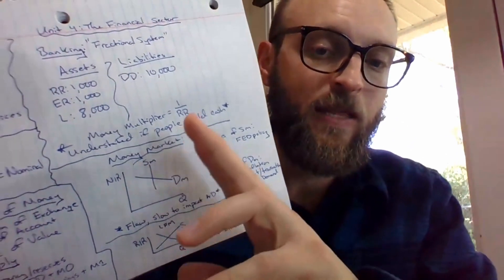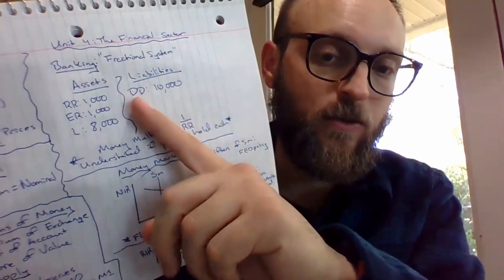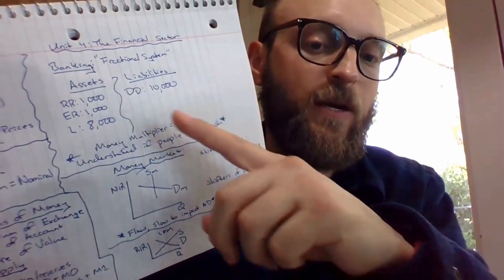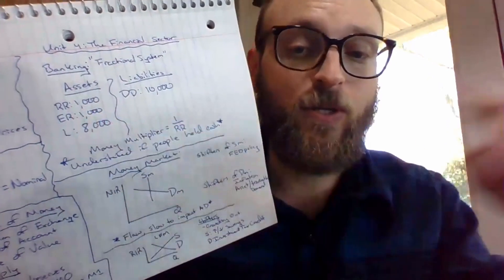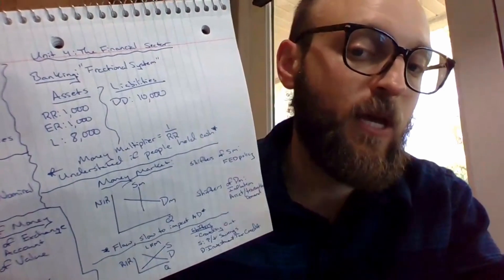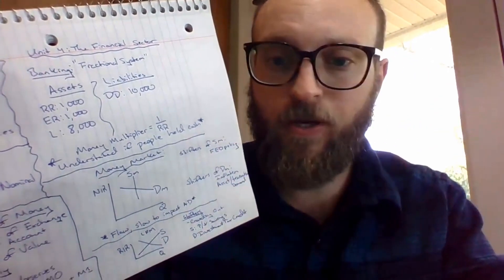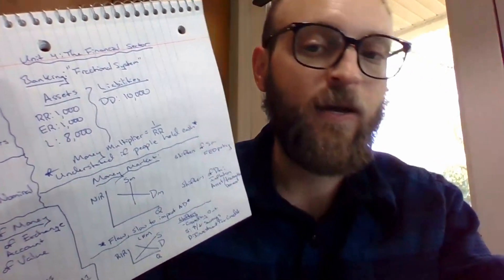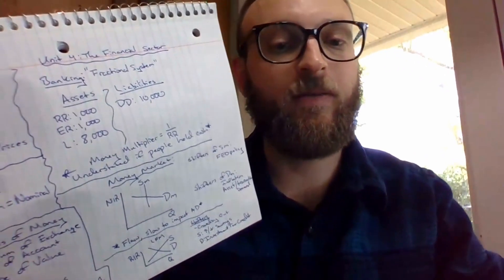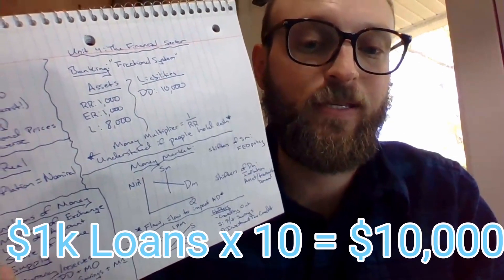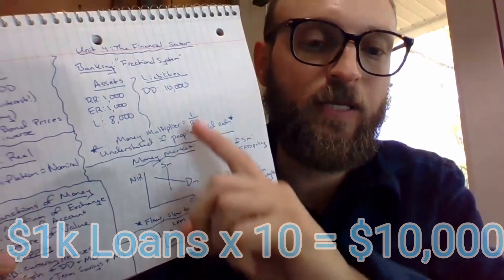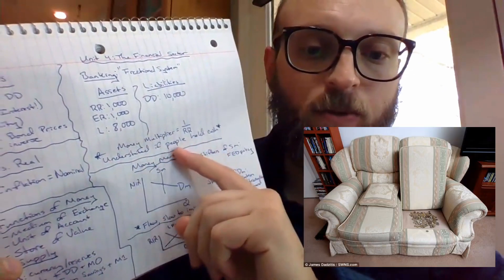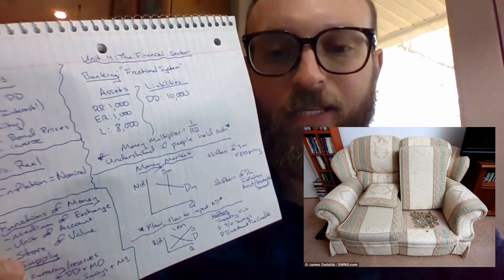Never forget: the money multiplier is one over the reserve requirement. So here, if the reserve requirement is 10%, any additional loans — say $1,000 in excess reserves — if those are lent out, we multiply that times 10. If the bank lent this out and every single person who took out a loan put it back in a bank and it was re-lent out, so on and so forth, the most we could create in the economy would be $10,000 in this scenario. Just watch out — this multiplier sometimes understates the effect because people hold their cash or lose it, like coins in the sofa.